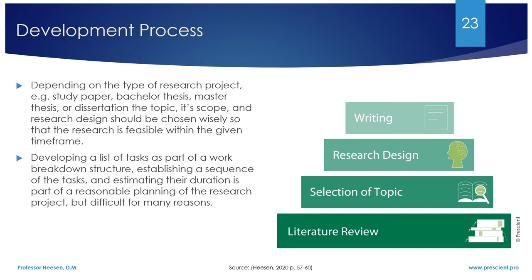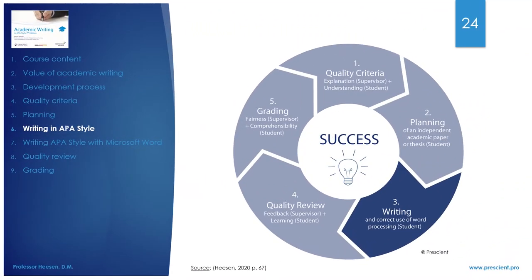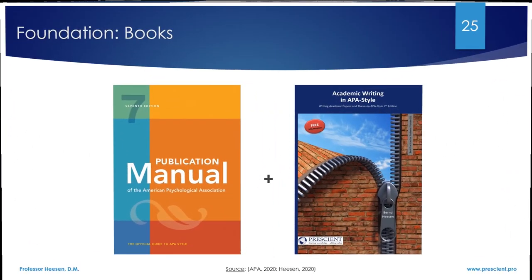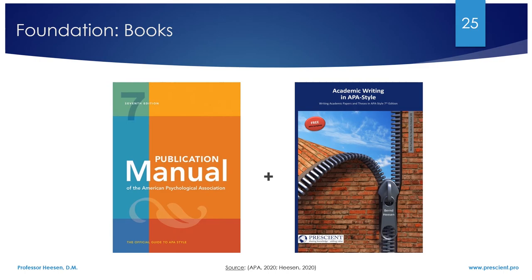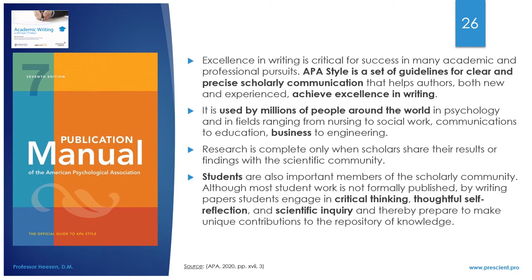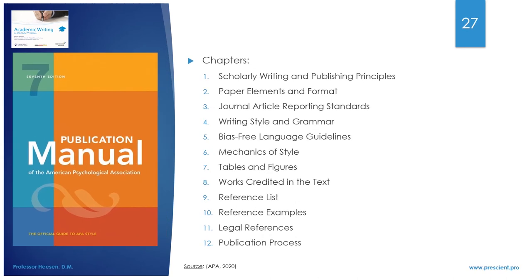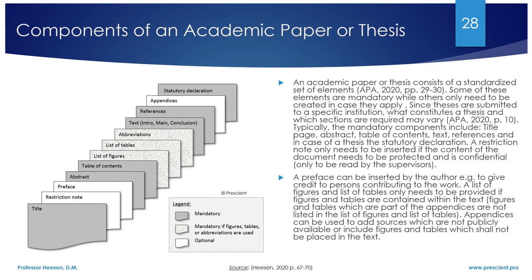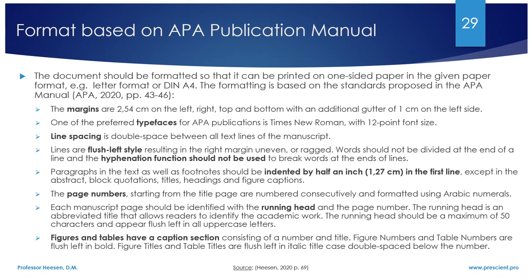Why is academic writing different from writing in general? The APA style is a set of guidelines for clear and precise scholarly communication, as explained in the APA manual combined with my book. Publications require certain components and should follow a standardized format. Here you see the components — they can be mandatory or optional. The Word templates I provide already contain these elements in proper APA format so you can get started right away. The APA manual describes formatting rules for margins, typefaces, line spacing, page numbering, figure and table captions, and much more. The Word templates offer specific formatting styles which assist with proper APA formatting.